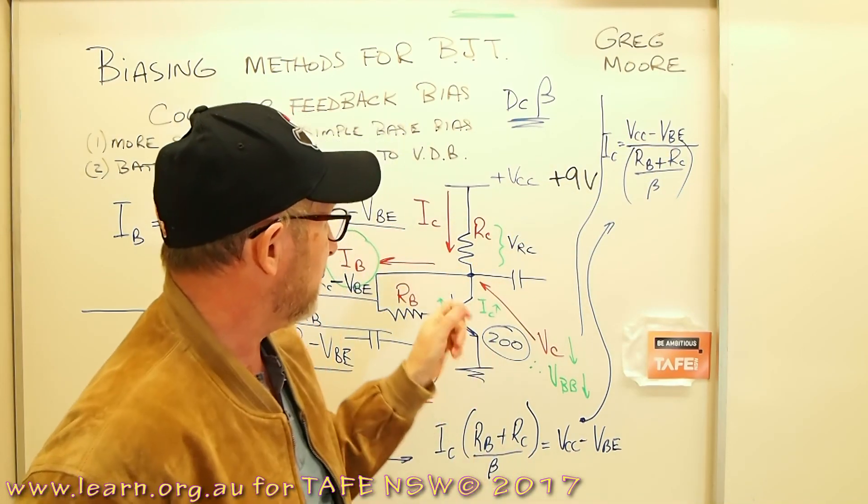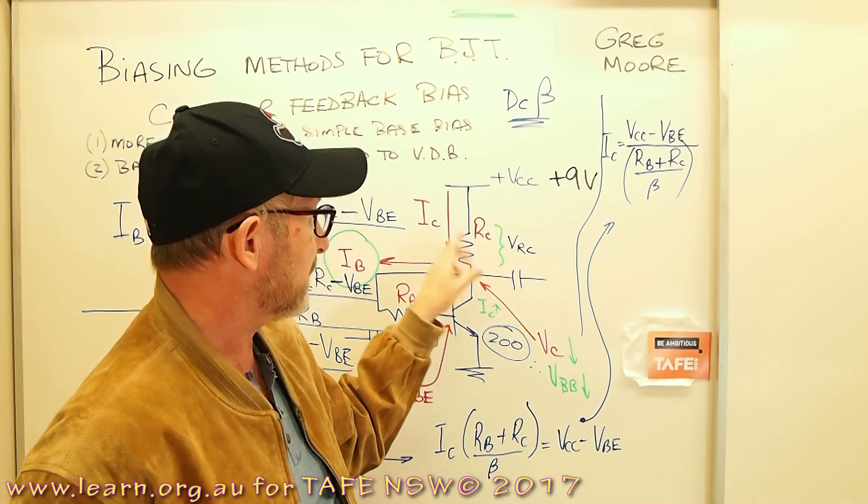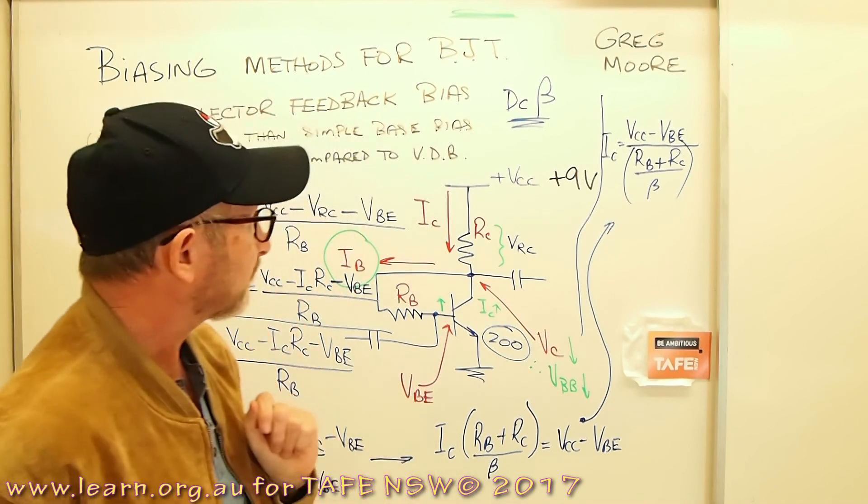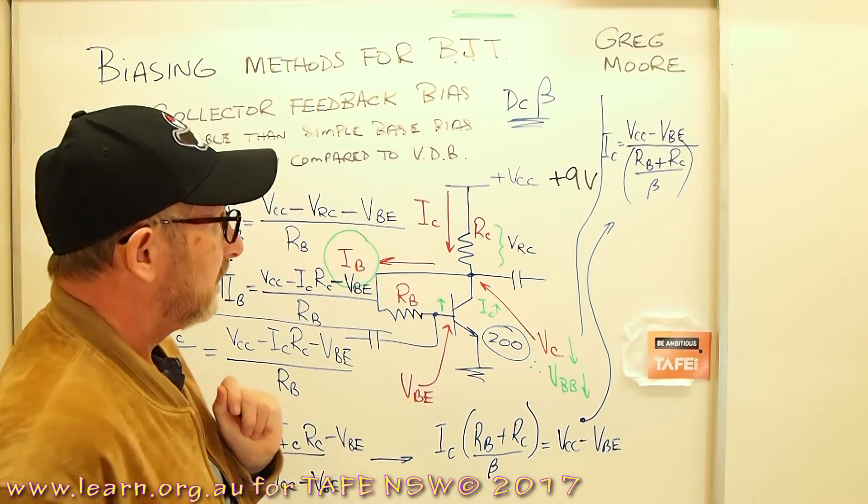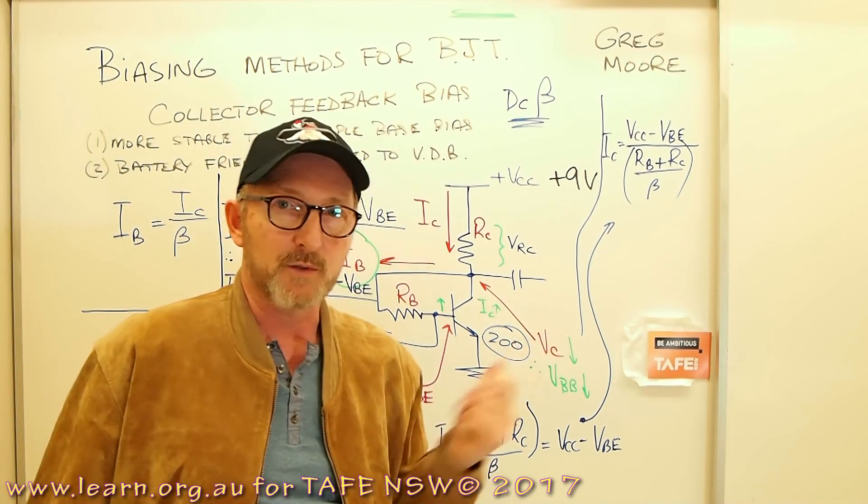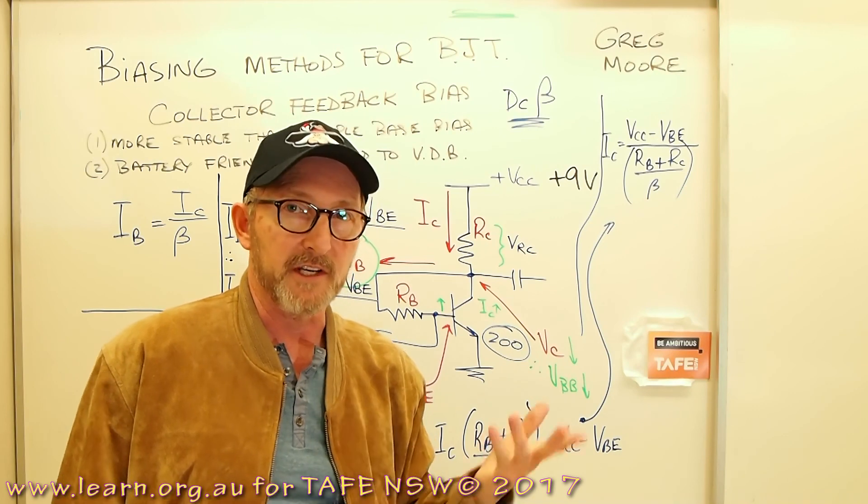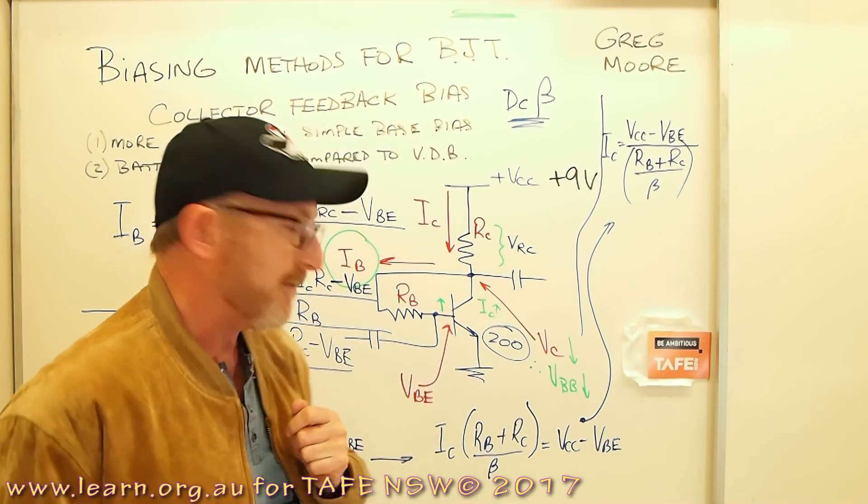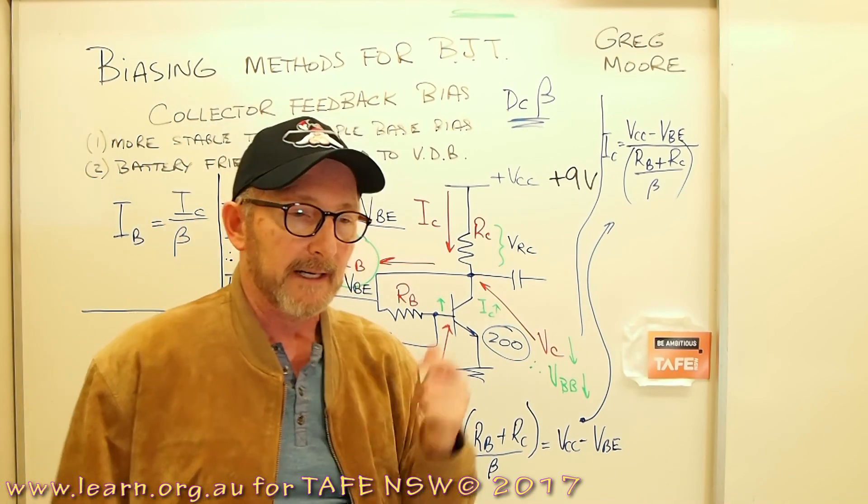Once you've got IC, then you can multiply IC by RC, get the voltage across that. Bang, you've got the collector voltage. And of course, once you've got the collector voltage, then you can go ahead, you'll be able to work out what the base current is, and everything will be solved with that circuit.